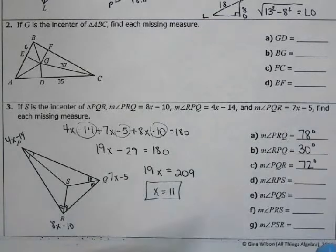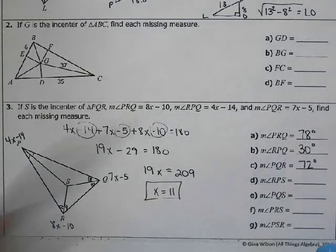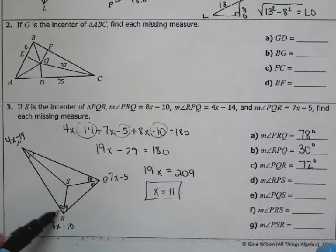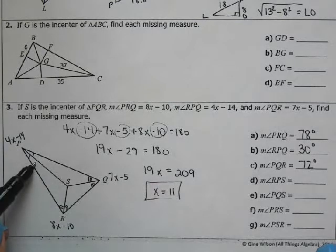Now, let's look at the rest of these angles. Angle RPS. So this angle here would be half of angle RPQ. So RPQ is 30.